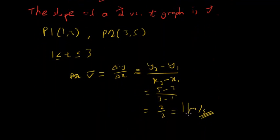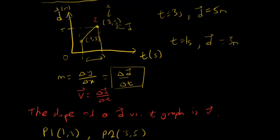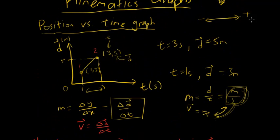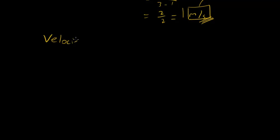We can see how velocity fits here because the unit for velocity is meters per second. The slope of a position-time graph is d over t, and the units are meters over seconds — which is exactly meters per second, the unit for velocity. This confirms that the slope of a position-time graph is the velocity of the object.